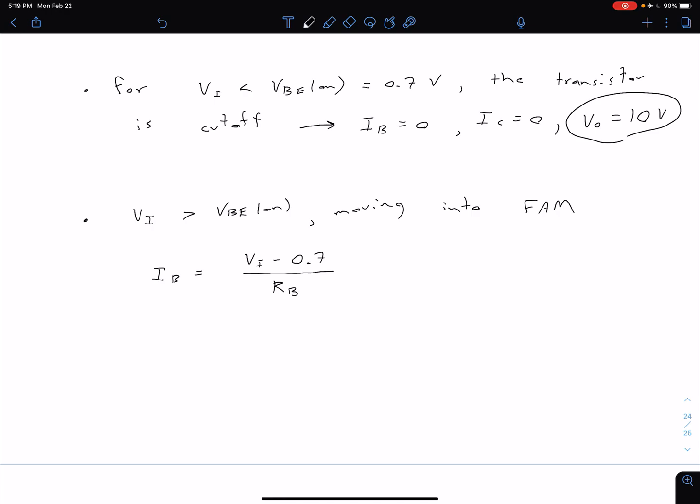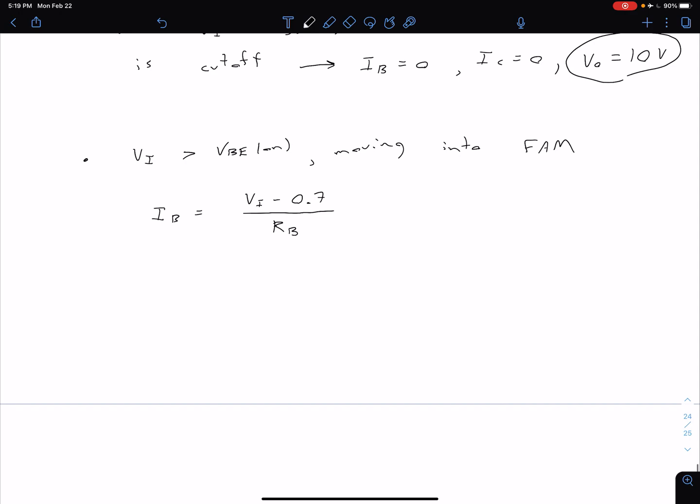That's actually going to be true as we head into saturation as well, but we know that in our forward active mode we can say that our IC is equal to beta IB and we can say that our beta IB using our previous equation is just going to be beta times the quantity of VI minus 0.7 divided by RB.